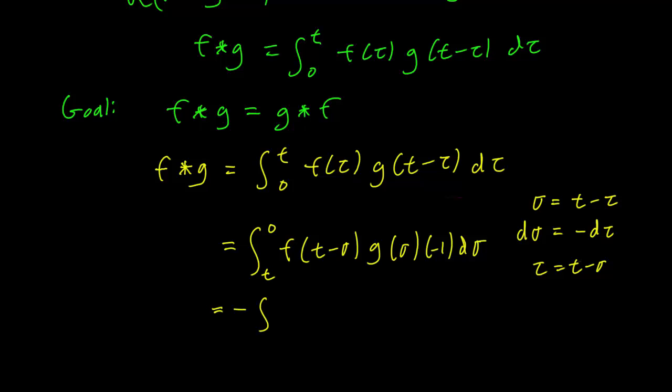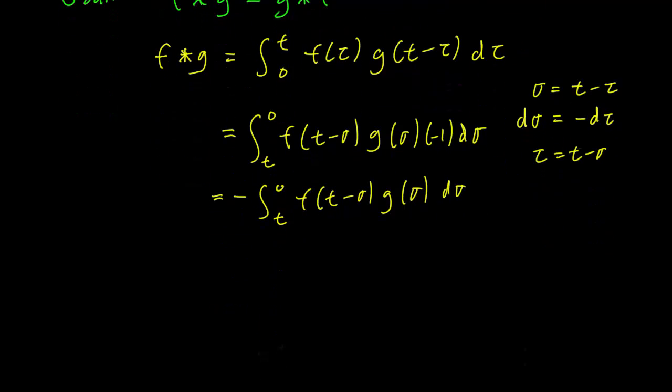But remember that taking the negative of an integral is the same as switching the limits of integration. So this is just going to be equal to from 0 to t. And we can of course switch whatever products inside the integral, so g(sigma) f(t minus sigma) d sigma.